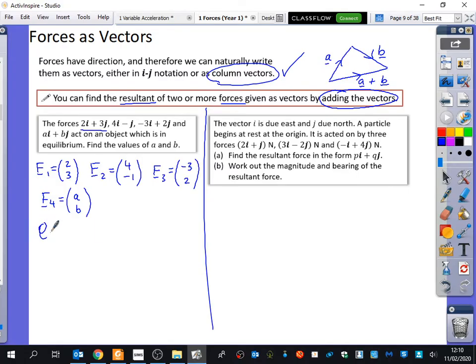So because it's in equilibrium, the resultant force when you add them together is zero. So when I add (2, 3), plus (4, -1), plus (-3, 2), plus AB, I get zero. So they have to add up to zero because there is no resultant force. It's completely balanced.